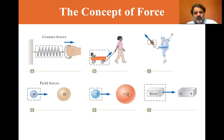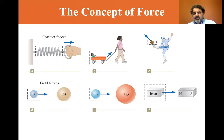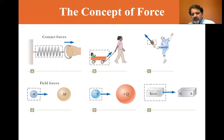But we do have non-contact forces called field forces. What you see in D here is a gravitational force — two objects pull on each other because of gravity. That's what keeps the moon in orbit around the earth, and that's what keeps the earth and moon in orbit around the sun. In E, you see electrostatic forces — the negative charge Q is attracted to the positive charge plus Q. And in F, we've all played with magnets. A chunk of iron is attracted to either the north or the south end of a magnet — without touching it, the chunk of iron can move. So there are two types of forces: contact forces and field forces.